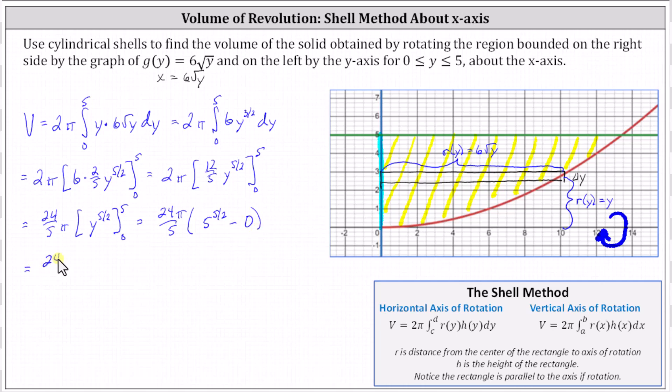Simplifying, we have 24π divided by 5 times 5 to the 5/2, which if we want to, we can think of as over one. Simplifying, one factor of five cancels out because 5 divided by 5 equals one. The 5 to the 5/2 simplifies to 5 to the 3/2, because 5/2 minus 1 is 3/2.